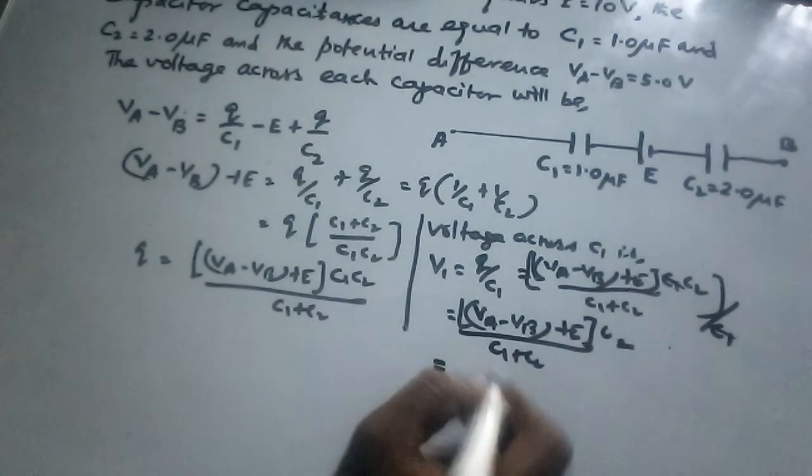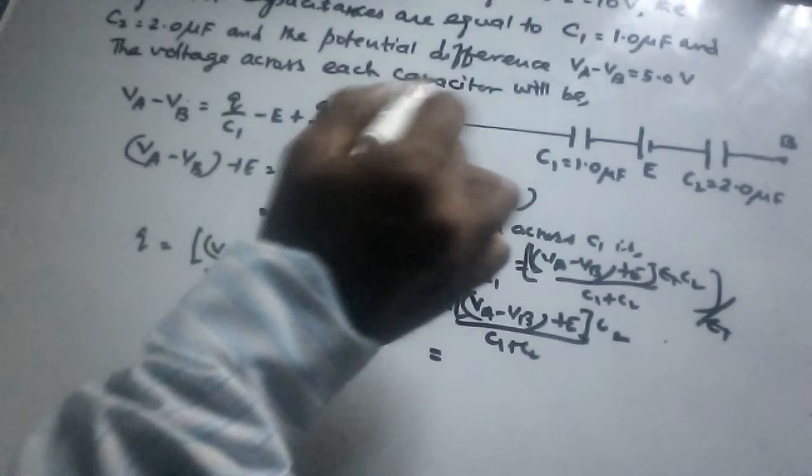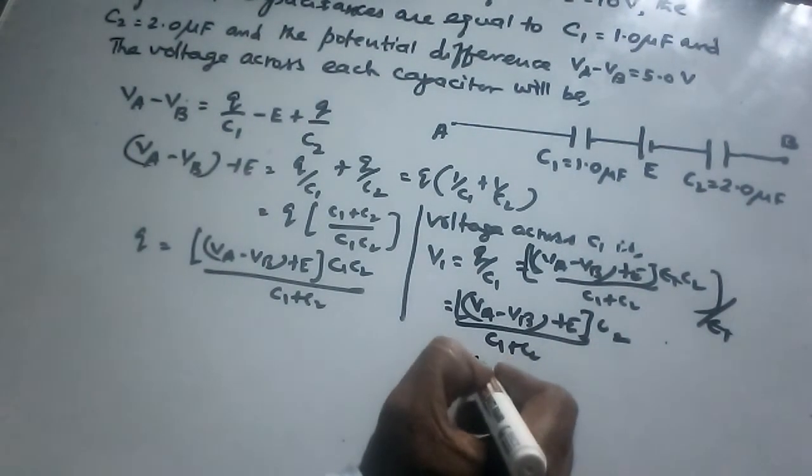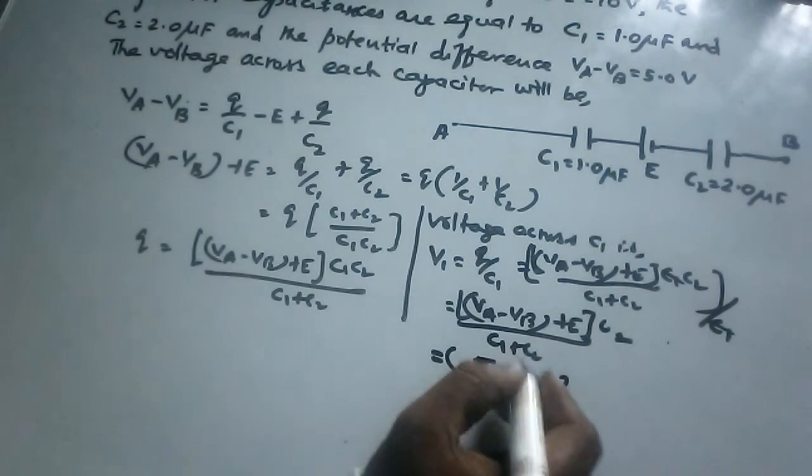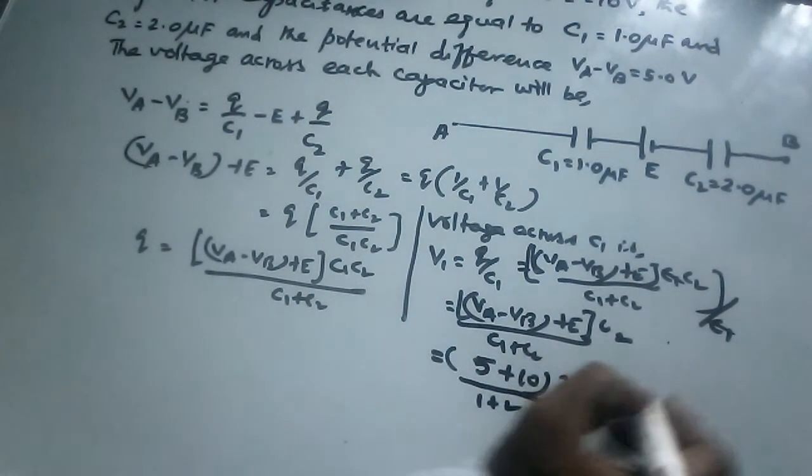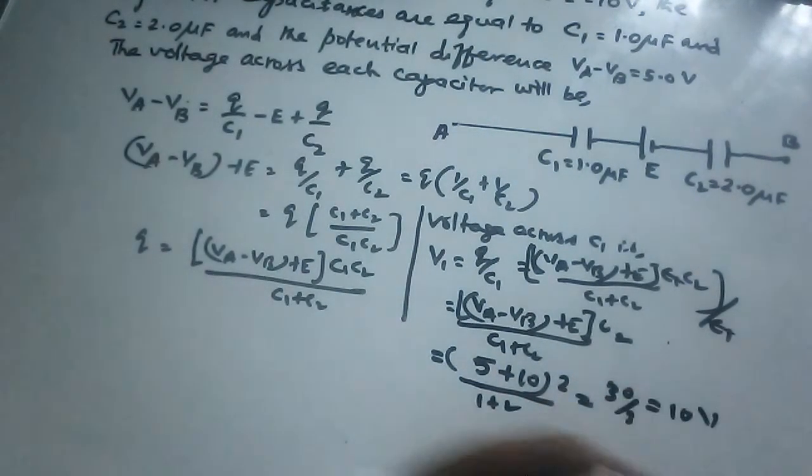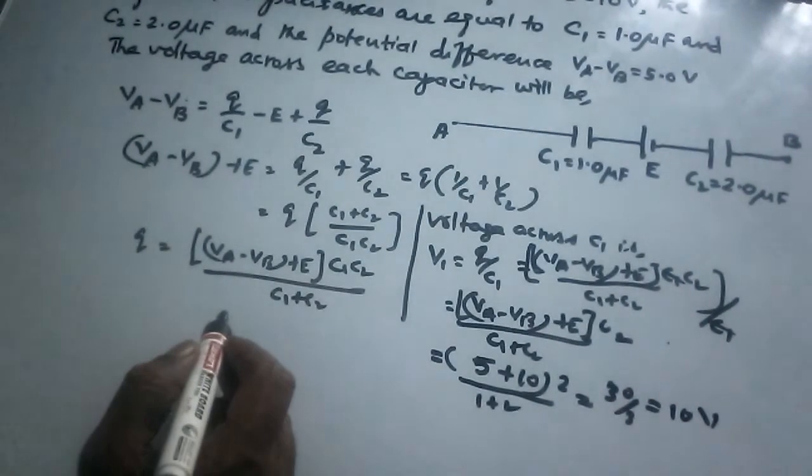Now we substitute the values: VA minus VB is 5V, E is 10V, C2 is 2 mF, and C1 plus C2 is 1 plus 2 equals 3 mF. So we get (5 plus 10) times 2/3, which equals 15 times 2/3, equals 10 volts. The voltage across C1 is 10 volts.